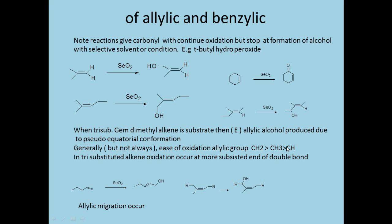Here are some rules for allylic oxidation. When we have a trisubstituted alkene with a gem-dimethyl group present, the E-allylic alcohol is produced due to the pseudo-equatorial conformation attained in that direction. Generally, CH₂ is oxidized more easily than CH₃ or CH, but this rule does not always hold — it can vary with the alkene and reagent conditions.